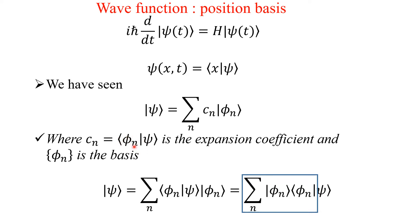Here the basis is |φ_n⟩ and |ψ⟩ is the total wave function. So |ψ⟩ = Σ_n ⟨φ_n|ψ⟩ |φ_n⟩, where c_n = ⟨φ_n|ψ⟩. Since the inner product is a number, you can move it freely with the ket vector. Rearranging, we get |ψ⟩ = Σ_n |φ_n⟩⟨φ_n| · |ψ⟩.